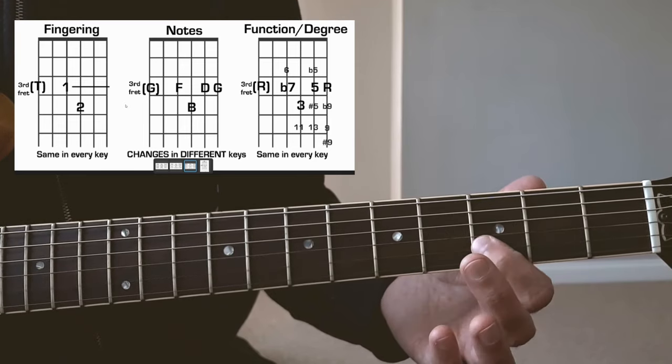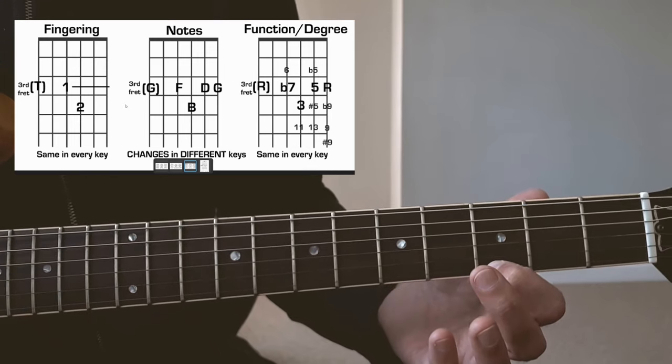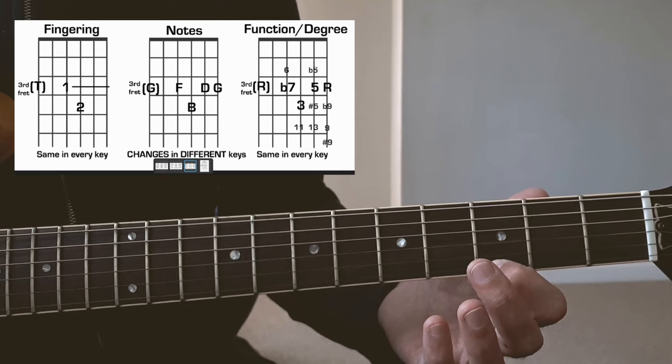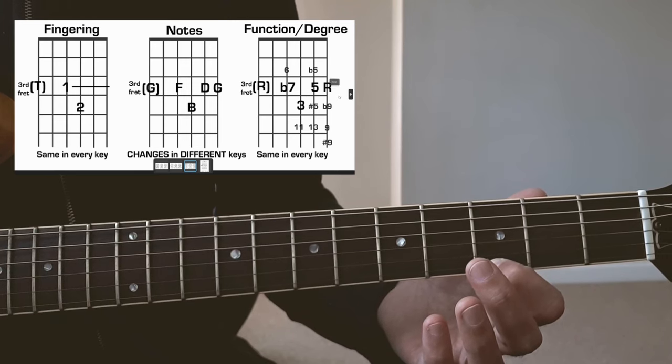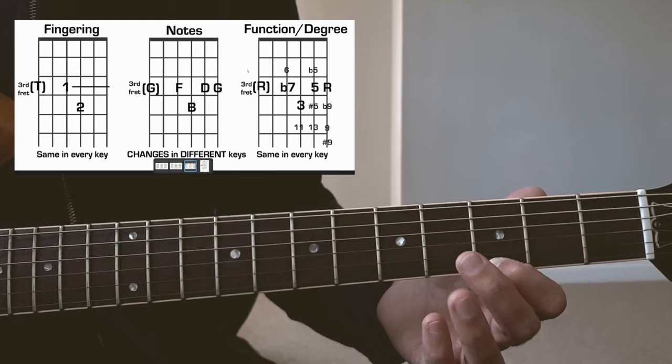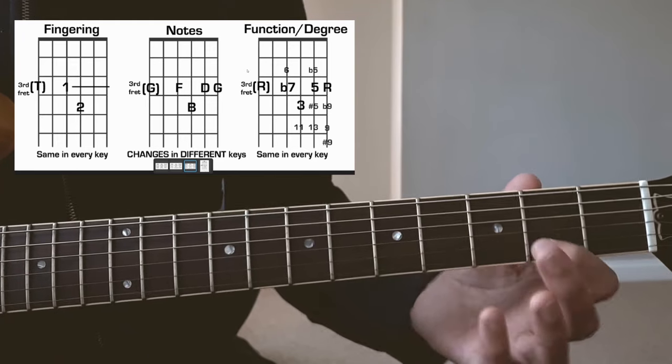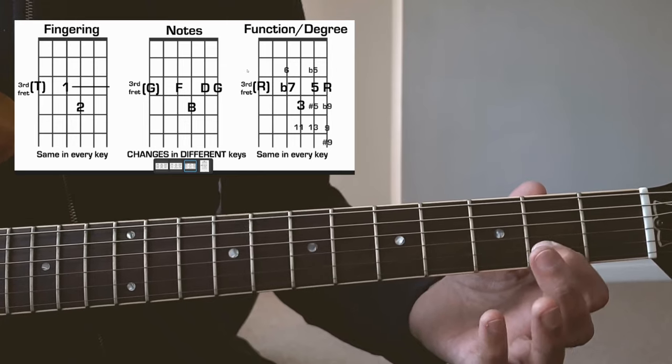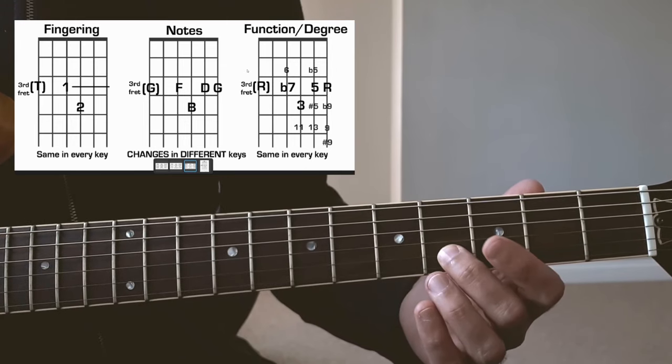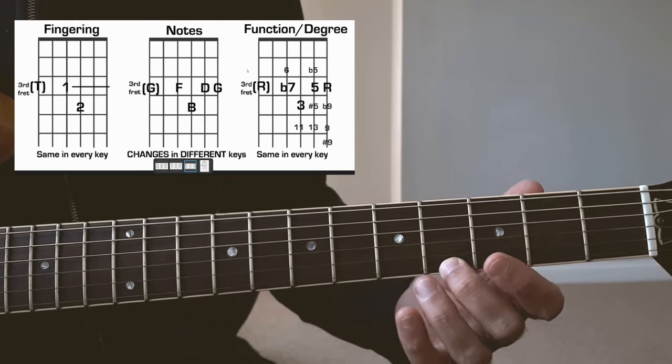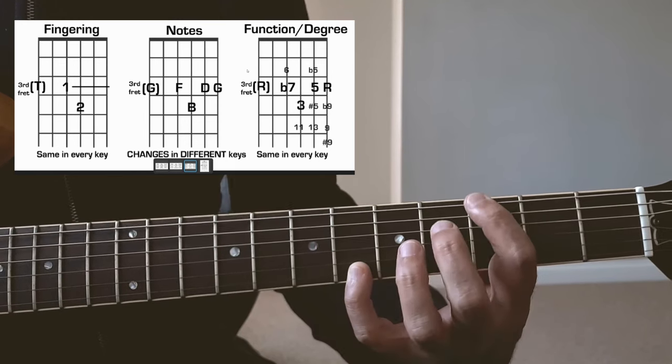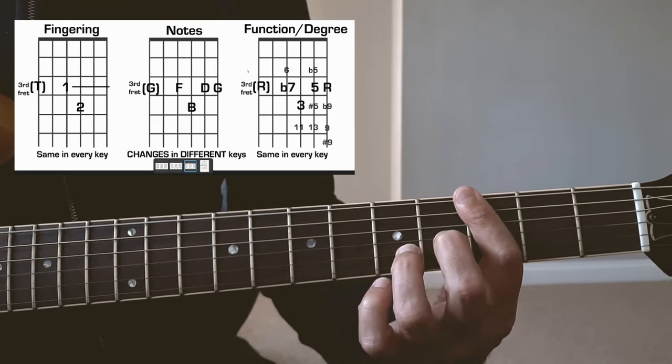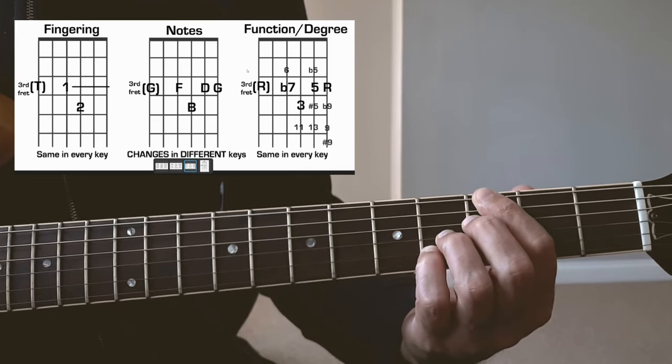And if I start to look at what notes are actually around that area, this is how I usually visualize, you know, where let's say the flat five is. If this is the fifth, the flat five is there, sharp five is there. The flat nine is there, ninth is there, sharp nine is there. The natural 13 is there, the sharp five or flat 13.